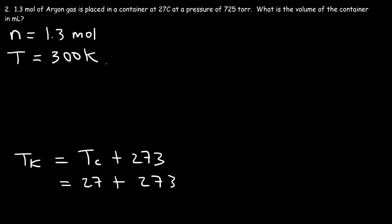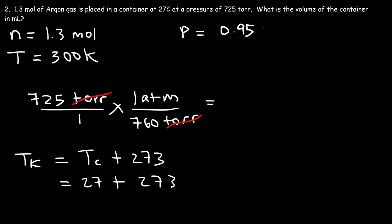Now the pressure is in torr, so we need to convert that to atm. So let's start with what we're given, 725 torr, and the conversion factor is one atm, which is equivalent to 760 torr. So to convert torr to atm just divide by 760. 725 divided by 760 is 0.95395 atm.